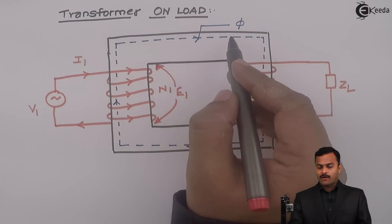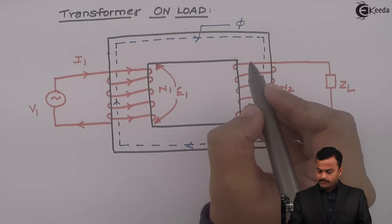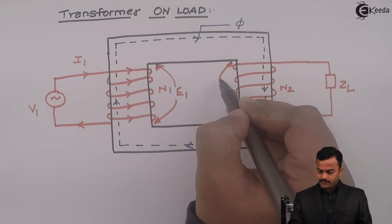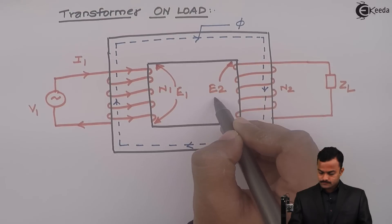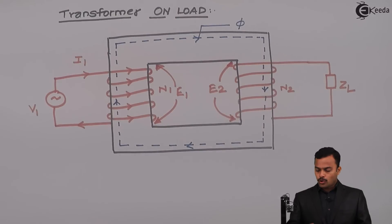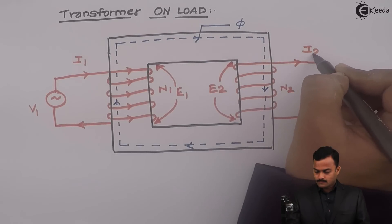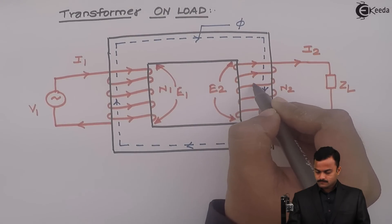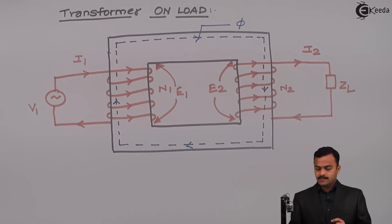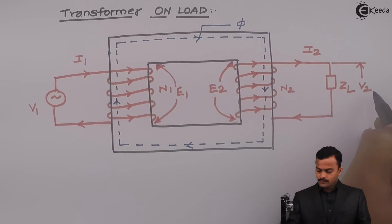Now the same flux phi is linked with N2 number of turns and it will give rise to secondary side induced EMF E2. E2 gets induced, and now I'm closing the secondary side winding through load ZL, which will give rise to secondary current I2, which in turn flows through ZL, and finally we get terminal voltage V2.